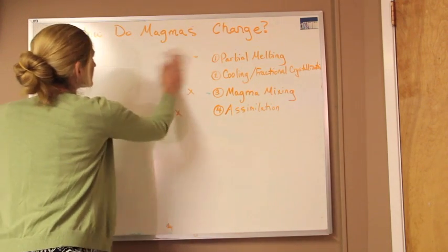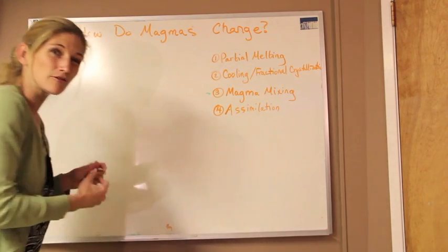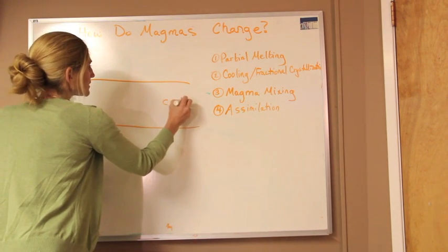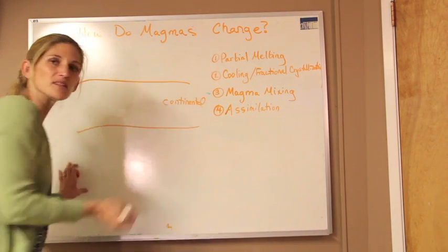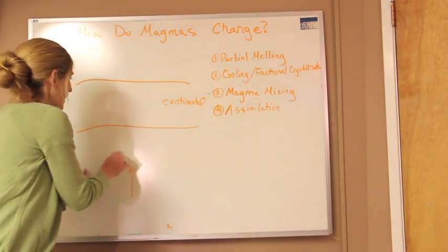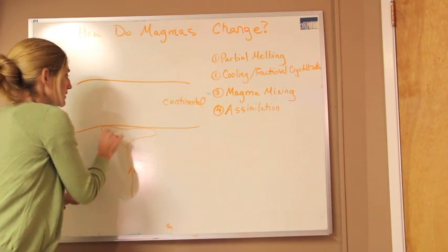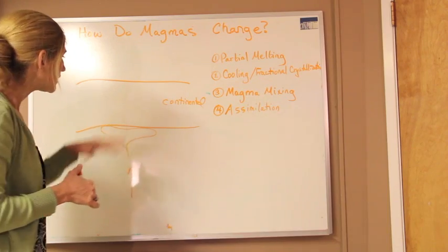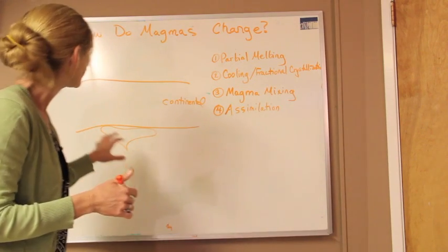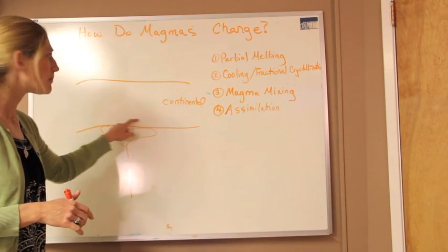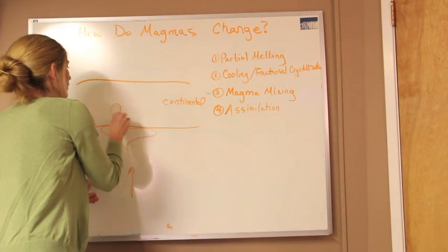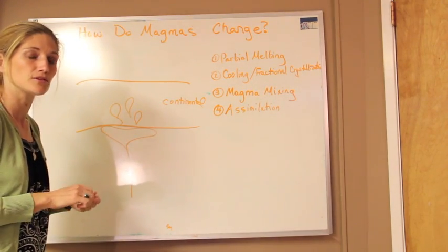The last thing we can see with magmas changing is partial melting. If we go to a place where we have a big piece of continental crust — maybe intermediate in its overall composition — and we get a mantle plume rising up to create a big hot spot, this heat sitting underneath that continental plate, that lithosphere, acts sort of like taking a rock and putting it on a hot plate. The bottom part of that lithospheric plate is going to start to melt, and that partial melting leads new blobs of magma rising up through the lithospheric crust.